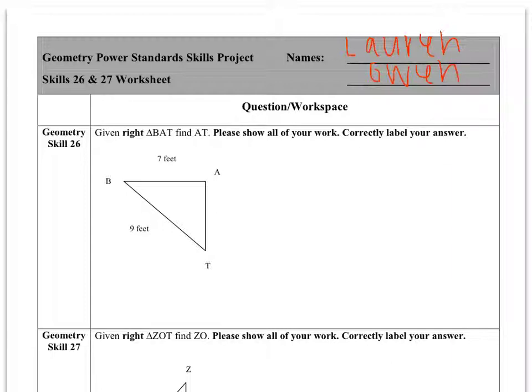I'll be doing skill 26. Given right triangle BAT, find AT. Please show all of your work and correctly label your answer. In this problem, we need to use the given information to find the missing length AT.